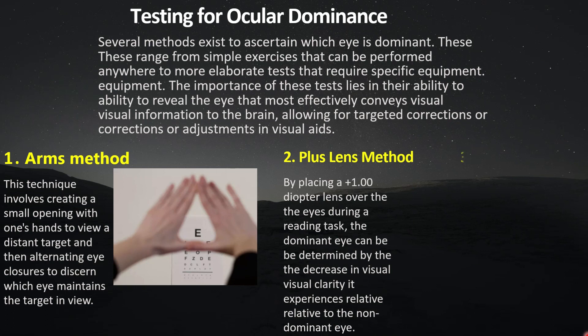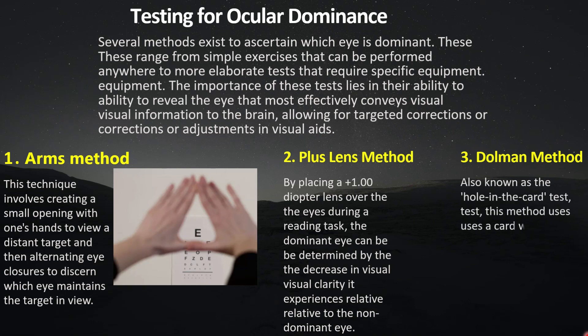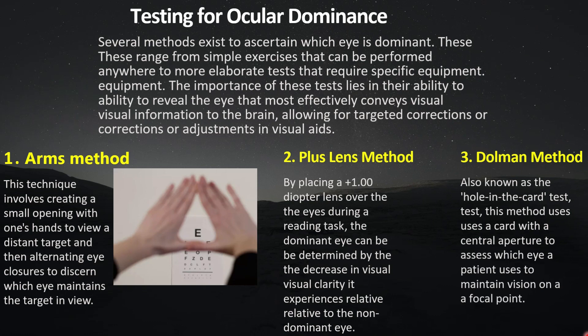The third procedure is the Doleman Method, also called the hole-in-the-card test. In this test, give the patient a card with a small hole in the middle and instruct them to hold it and view a distant object through the hole with both eyes open. Then alternatively close each eye to determine which eye is viewing the object — that is the Dominant Eye.